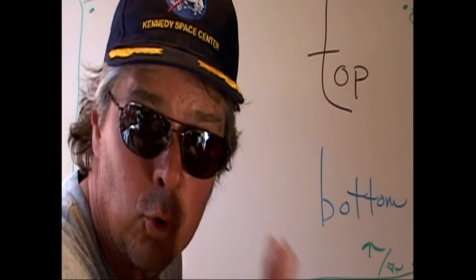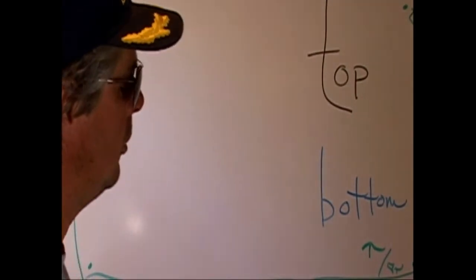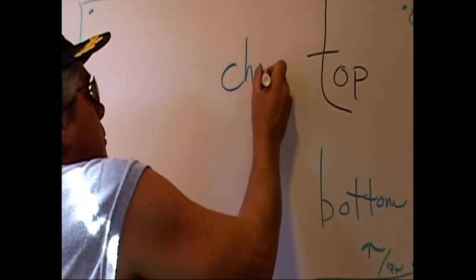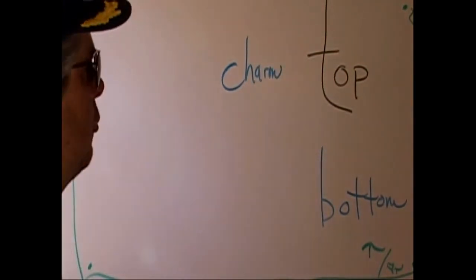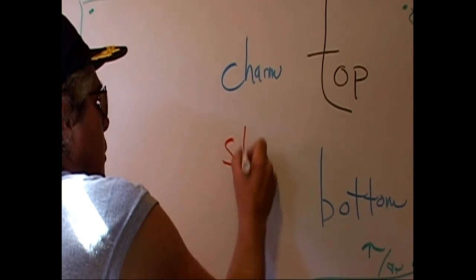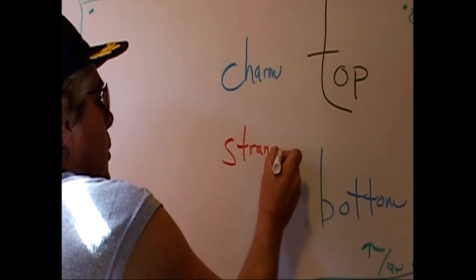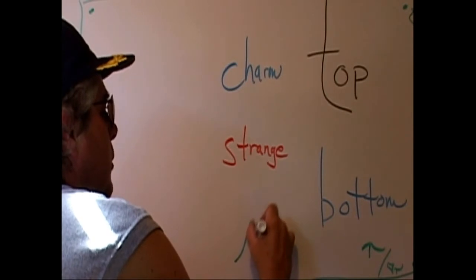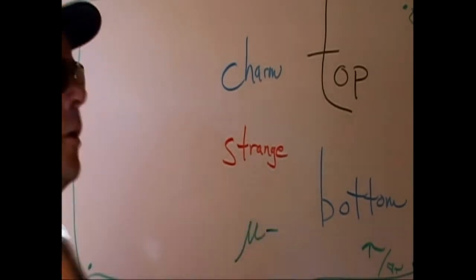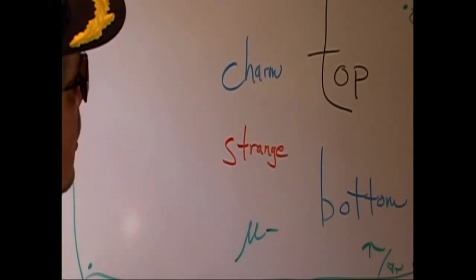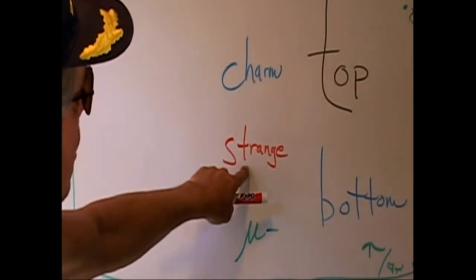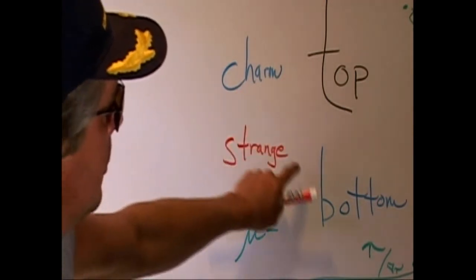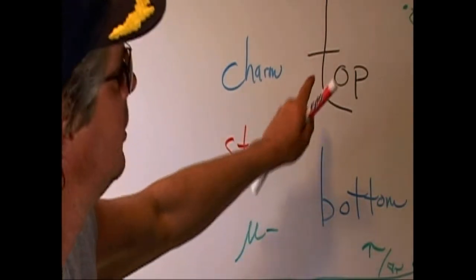As the universe expanded and got cooler, the next row of particles were known as charm and strange. The force carrier for this second generation is called the muon — it has a negative electromagnetic charge. These were the first particles discovered: strange, then charm, then bottom, and then finally the top.